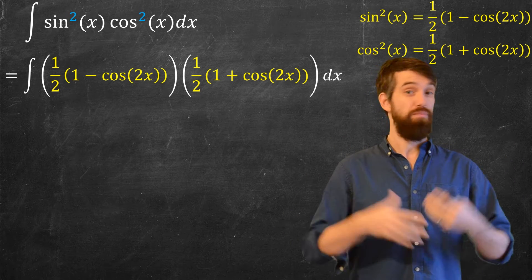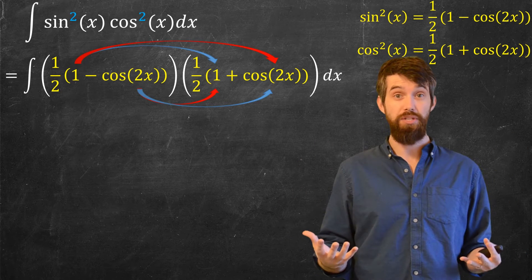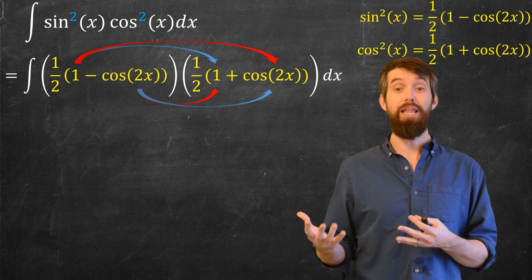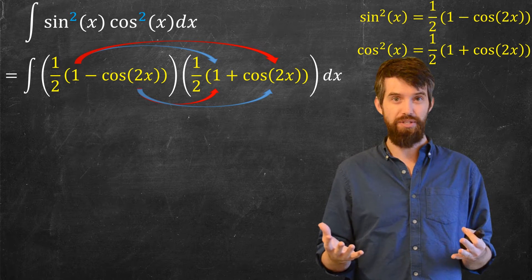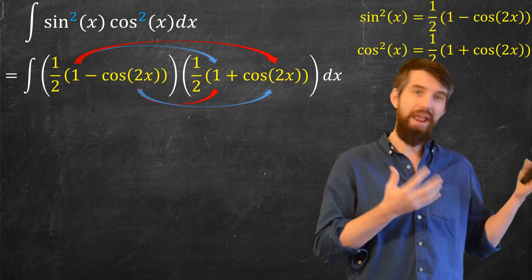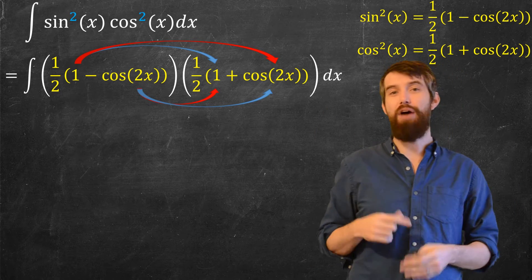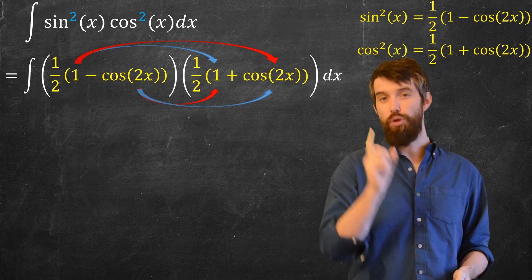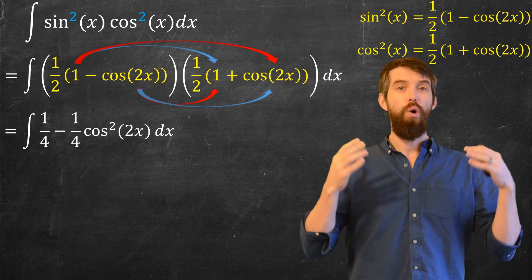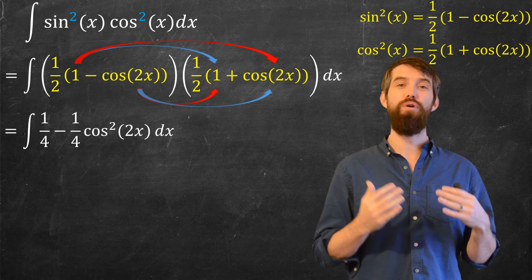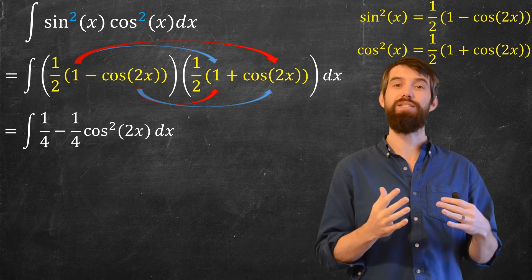Okay, now, two things being multiplied, so I have to go and expand them out. And of my expansion, let me look first at the red arrows. The red arrows cancel. It's 1/2 cos 2x and minus 1/2 cos 2x—they cancel. But the blue arrows remain, so what do I get? 1/4 minus 1/4 cos squared 2x dx.